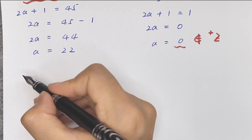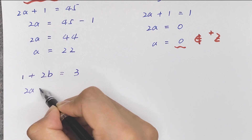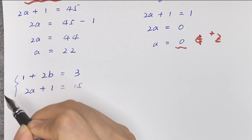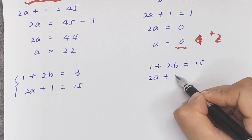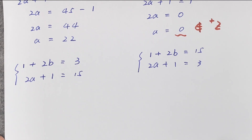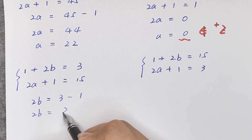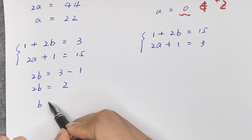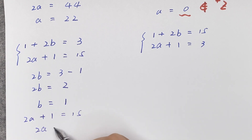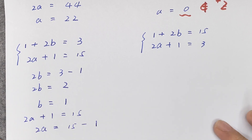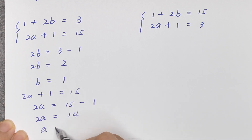For the case (1 + 2b) = 3 and (2a + 1) = 15: 2b = 3 − 1 = 2, so b = 1. Then 2a + 1 = 15, so 2a = 14, giving a = 7.